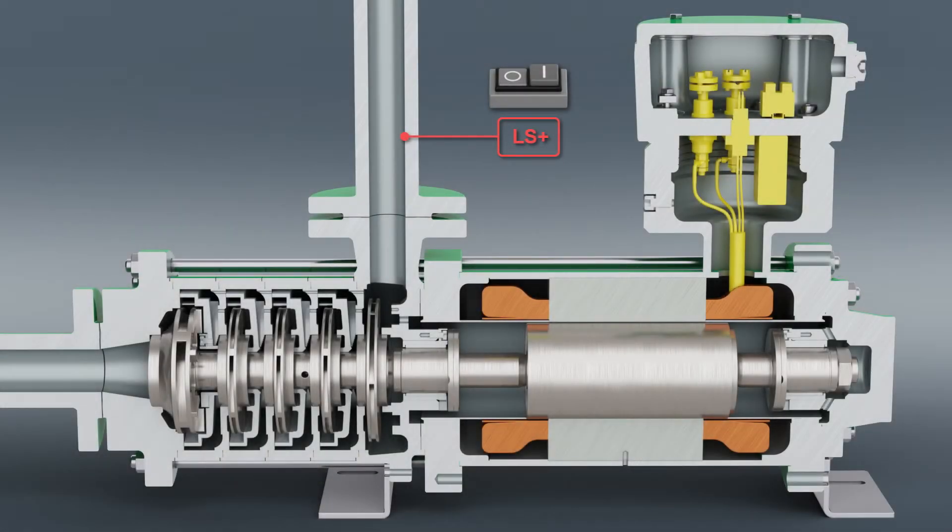The Hermetic Multi-Stage Canned Motor Pump is filled through the suction nozzle. The fluid flows into the pump as well as in the motor and pushes the air out through the discharge nozzle.